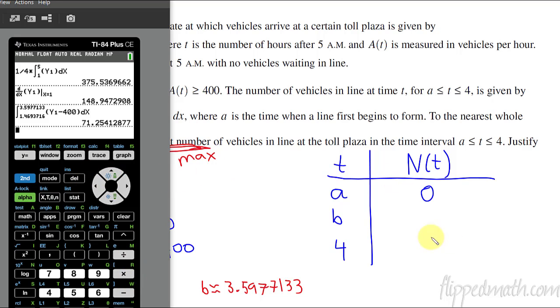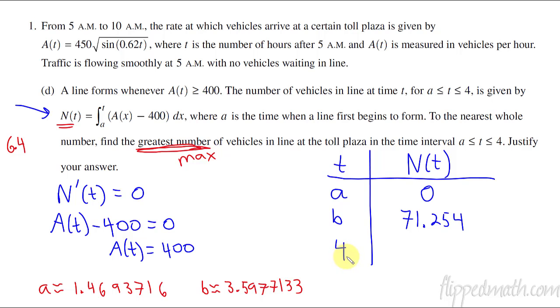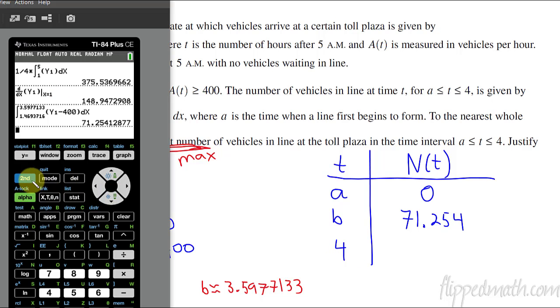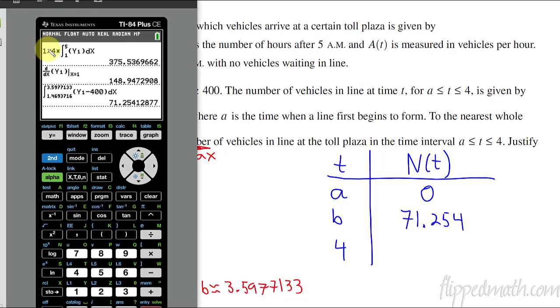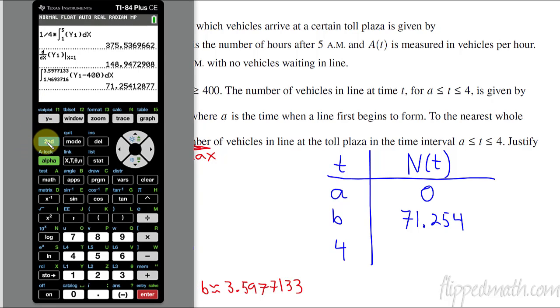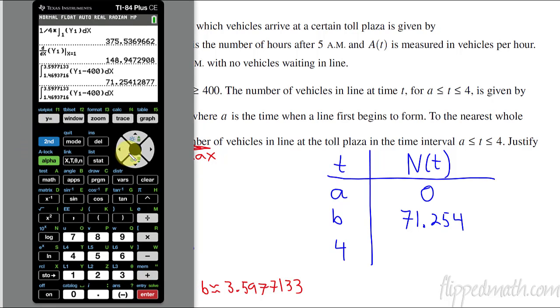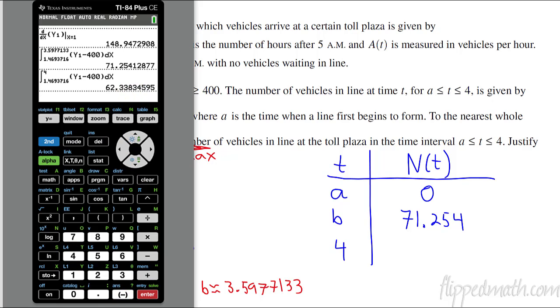So then we can jump to going from A to B. So that one would be my 3.5977133. Bring up my function. I plugged into Y1. And then I have to minus 400, right? A(X) minus 400. And that's all with respect to X. Hit enter. Boom, 71.254. And then I'm going to go from A to 4. So all I have to do for this one is just bring up my last, the last thing I just did. I'm just going to hit second enter and that'll just bring it up. And then I just go back and change the upper limit to A4. 62.338.